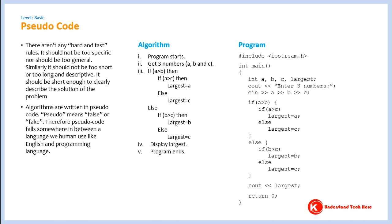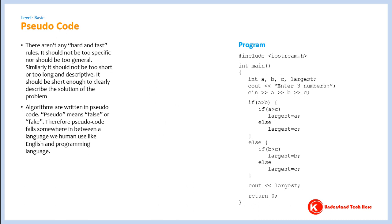Pseudo code should be generic in nature. It should be possible to write a program in any programming language by following a given algorithm. For example, here following this algorithm I have written a program in C++ language, but following this algorithm I should be able to write a program in any programming language.